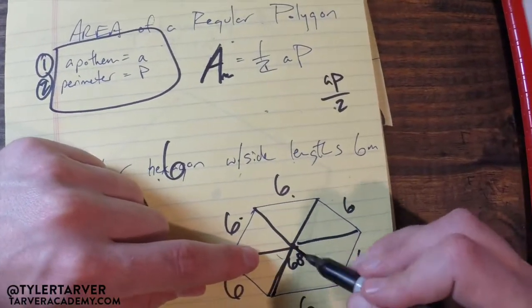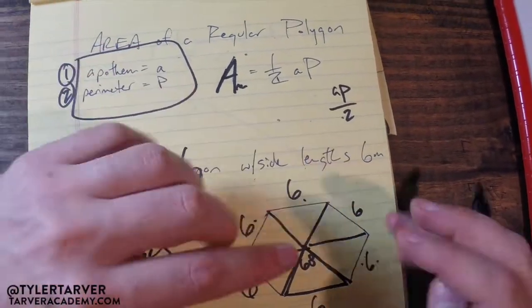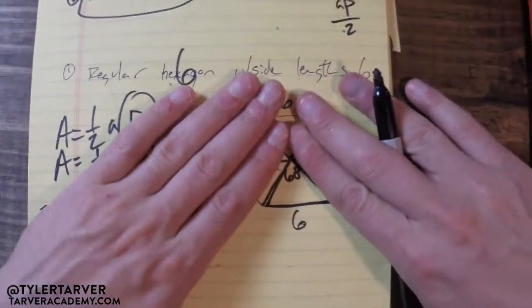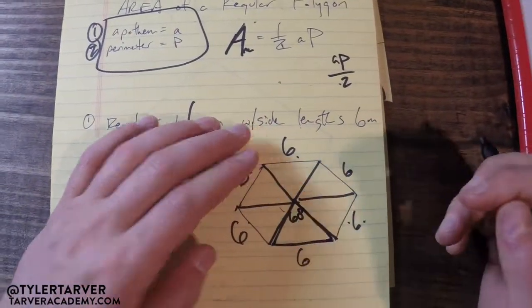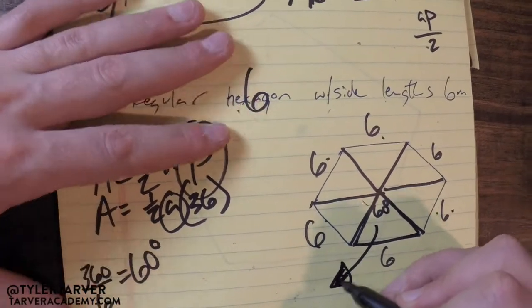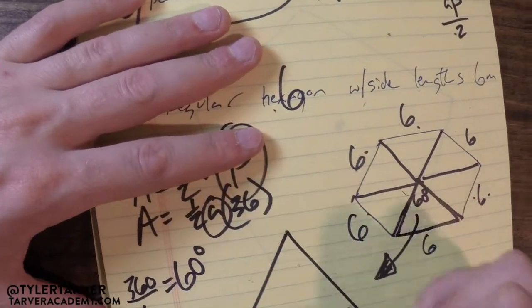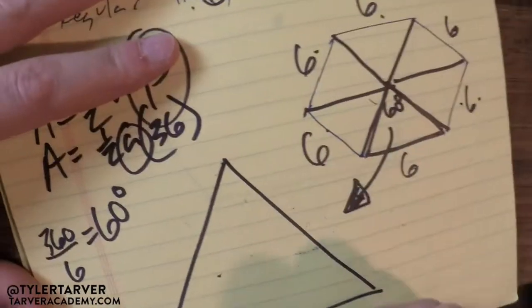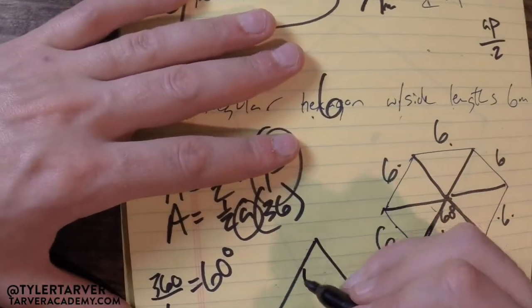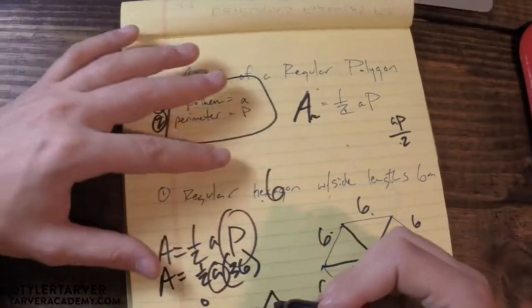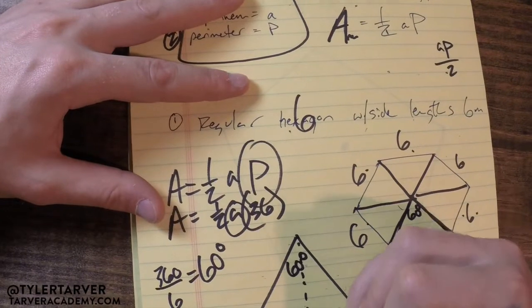Now, you've got your triangle. This is what I like to do whenever I do this. I don't need the rest of this. I just need this triangle right here. So I'm going to draw it out here larger, because it was getting cramped in there. Relabel my stuff. That's six. That's 60 degrees. And now I need to find the apothem, correct?